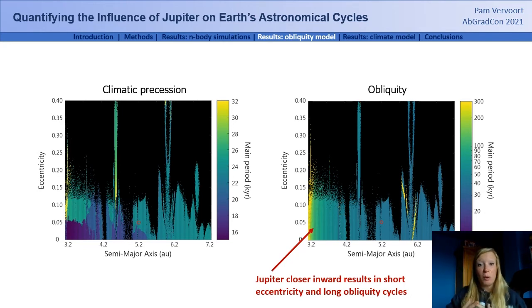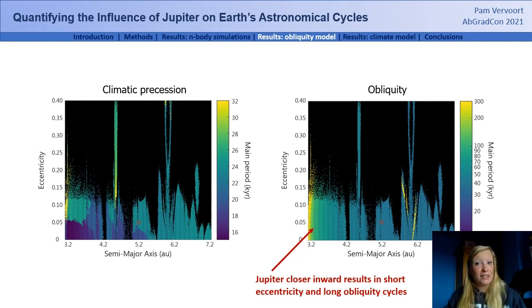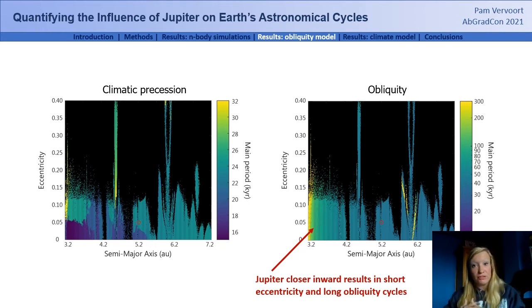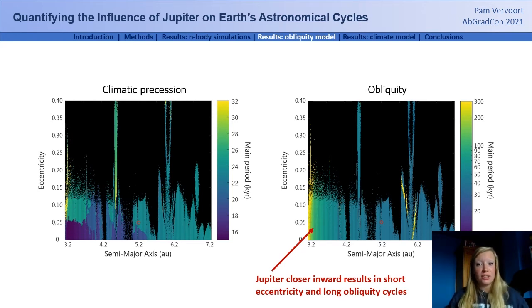This can have interesting climatic consequences as various climate feedbacks act on different timescales. For instance, what would happen to the surface climate if the eccentricity cycles are as short as 30,000 years? Would we experience very rapid glacial-interglacial cycles, or would the rate of change be too high for ice caps to grow and cover large surfaces? What would happen to atmospheric dynamics or ocean circulations, which are also important climate controllers?